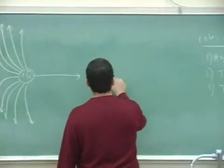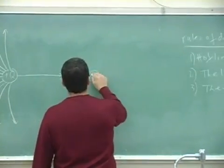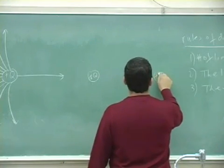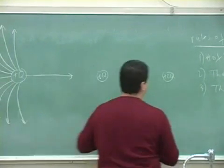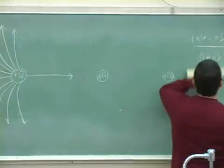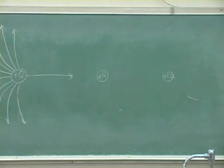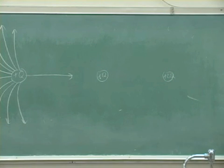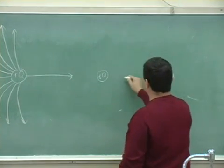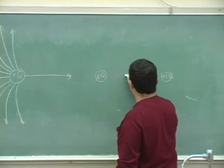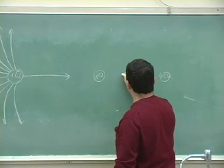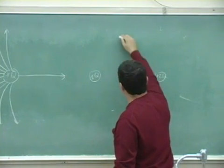Now for a harder example: what if we have plus q and plus 2q? The asymptote moves closer to the smaller charge, so the point where the electric field is zero shifts a little closer to the +q side.